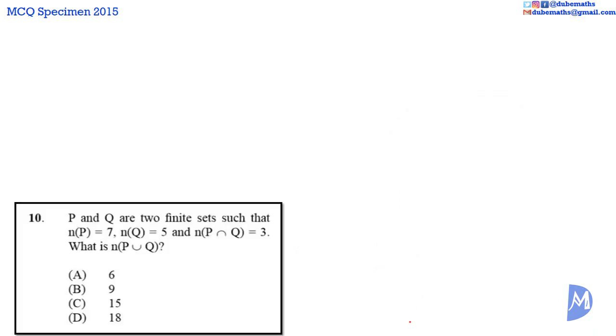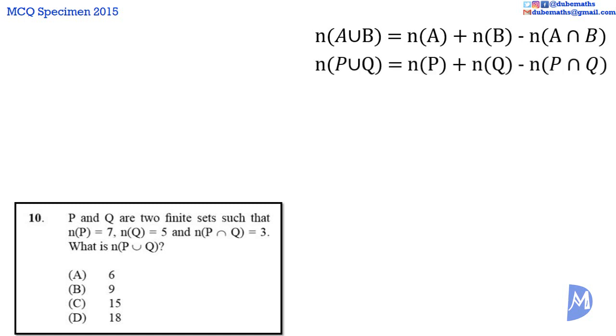Question 10. Recalling the result, the number of elements in A union B is equal to the number of elements in A added to the number of elements in B, subtract the number of elements in A intersect B. It follows that the number of elements in P union Q is equal to the number of elements in P added to the number of elements in Q,